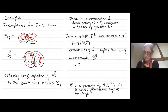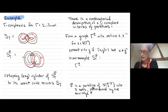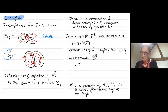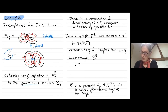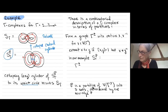Here's an example of what gamma complexes look like for a particular graph — there's the Salvetti, and there's another one I'm calling S_gamma(p). Collapsing the central cylinder down to its waist circle gives back the Salvetti.